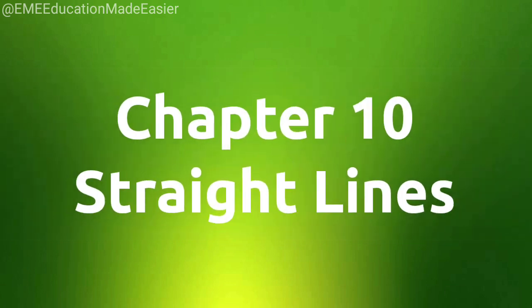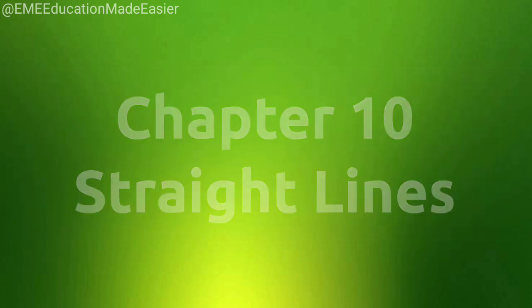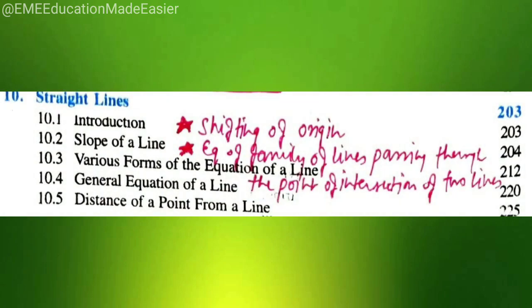Now, coming to chapter number 10, straight lines, shifting of origin and equation of family of lines passing through the point of intersection of two lines have been deleted. Related to this, we have different questions. So, all have been deleted.